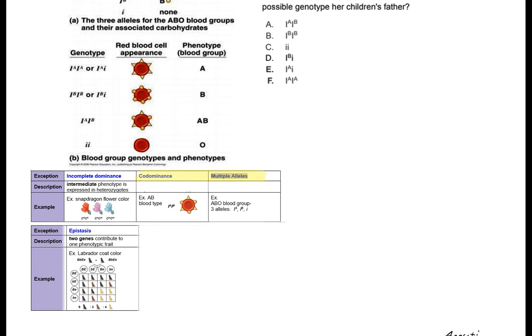We also have incomplete dominance where an intermediate phenotype is expressed in heterozygotes within the same gene. For codominance, which is apparent in blood type just like we discussed in class, you have both phenotypes expressed in heterozygotes.